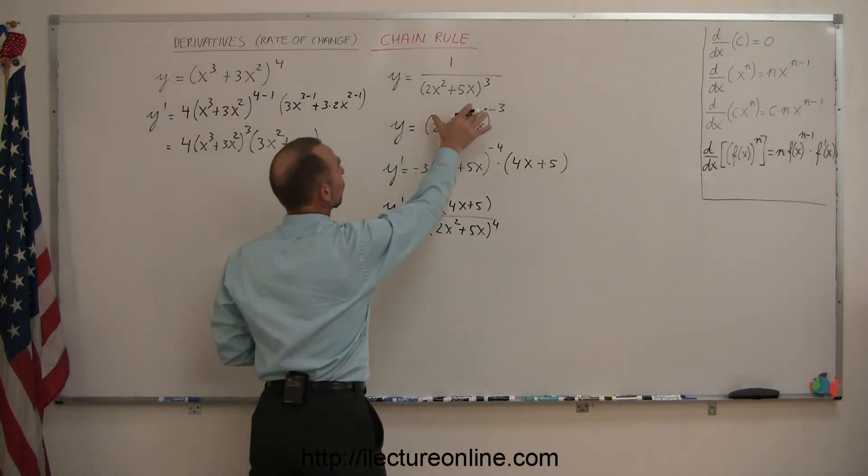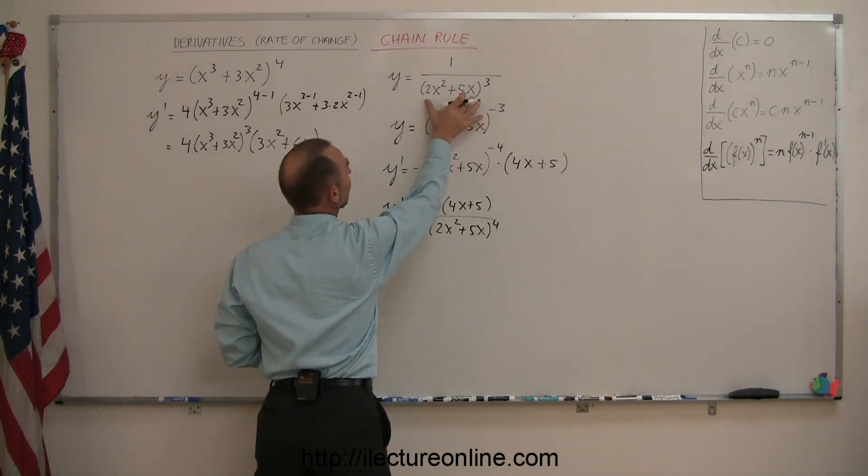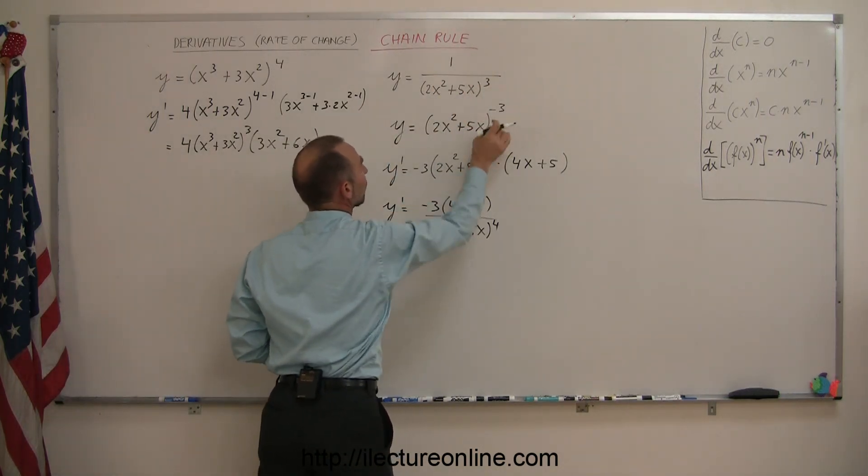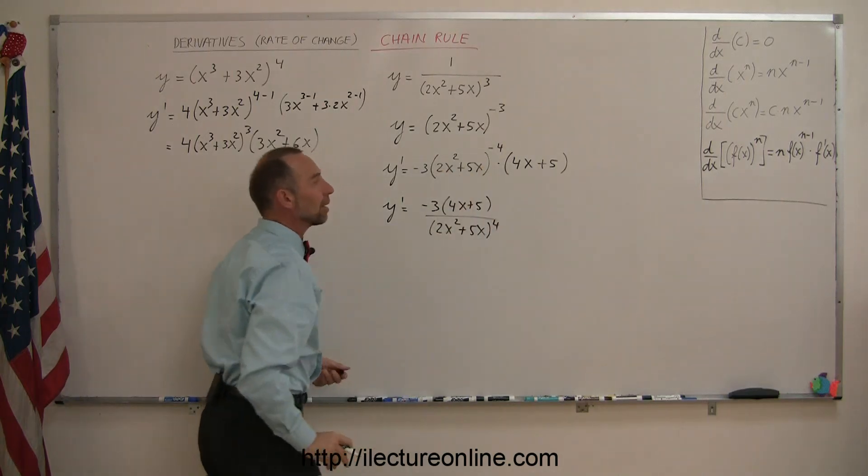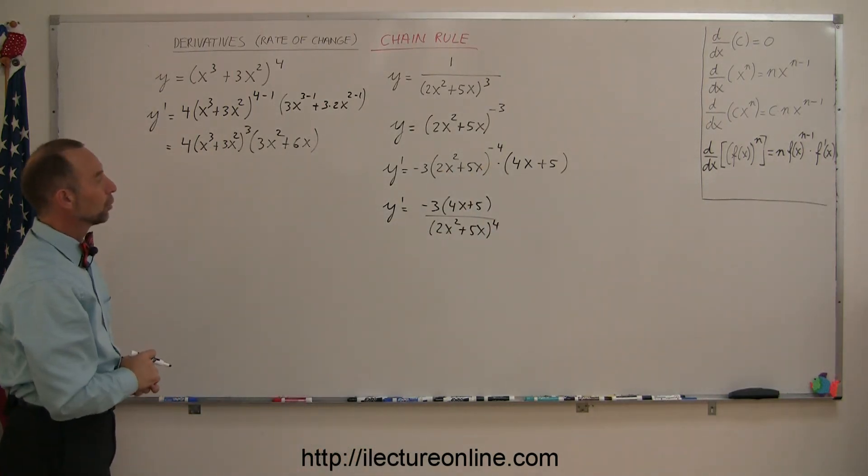In the case you have a problem like this, where the function is in the denominator, you can move it to the numerator, write it to a negative exponent, and then apply the same chain rule there to get the derivative. All right, so that's how you do that. And on to the next derivative on our next video.